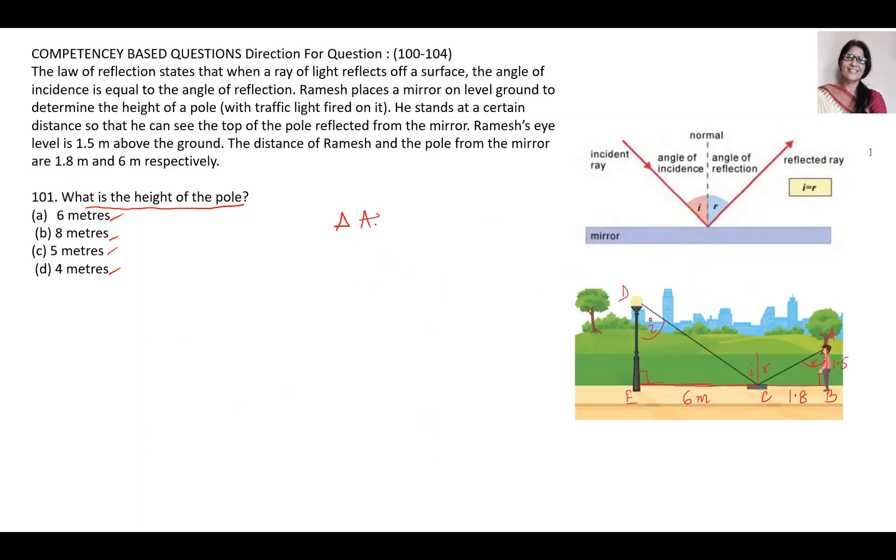Triangle ABC is similar to triangle DEC. We have already proved it. D angle is equal to A angle, B angle is 90 degree. So AB upon DE is equal to BC upon EC.